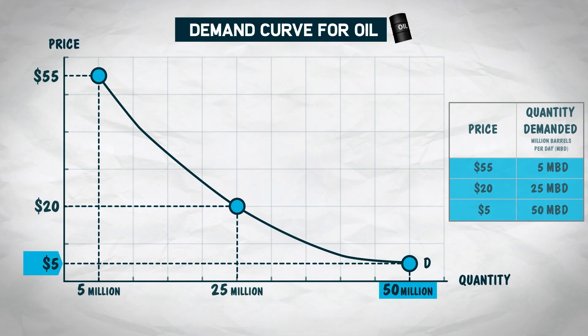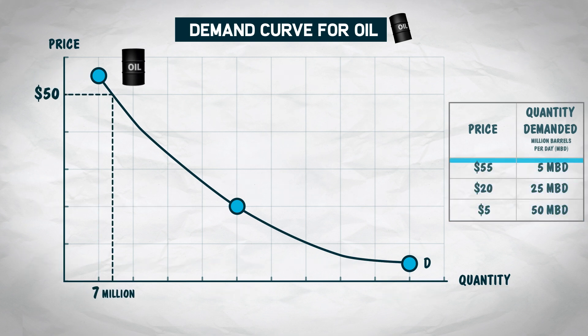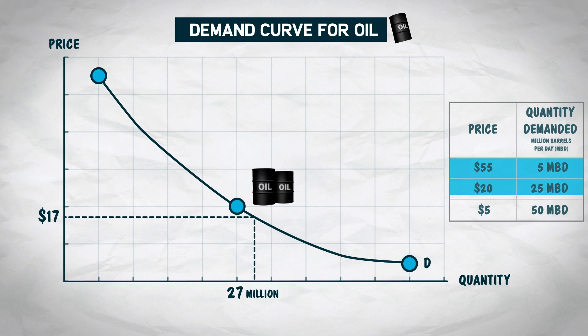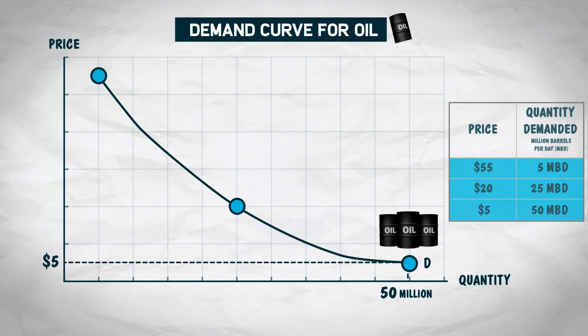Immediately, we see a key feature of the demand curve, which is that it slopes downward. At a lower price, the quantity demanded is greater. That makes intuitive sense — if the price is lower, you'll buy more.